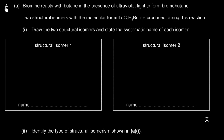Question 4, Part A: Bromine reacts with butane in the presence of ultraviolet light to form bromobutane. This is an alkane reacting with a halogen under UV light, substituting one hydrogen for bromine — this is free radical substitution. Two structural isomers with molecular formula C₄H₉Br are produced.